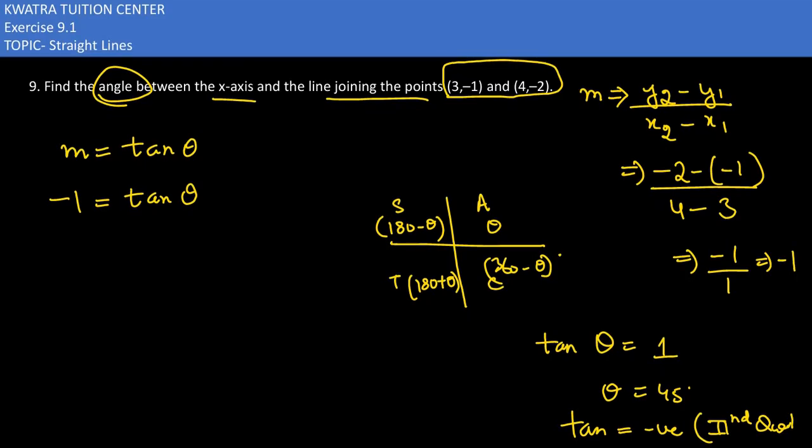That's 180 minus the angle. So 180 minus 45 degree is 135. Ki tan 135 degree would be equal to tan theta. Comparing both the values, what angle you would have?